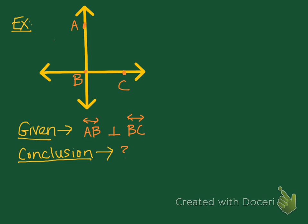Let's try an example or two. Sometimes we're given the givens and then we're given a prove or a conclusion statement and we're asked to actually prove it, but it's important that we can also make our own conclusions. We're going to follow the five steps we just talked about. Take a look at this picture. The given says that line AB is perpendicular to line BC.